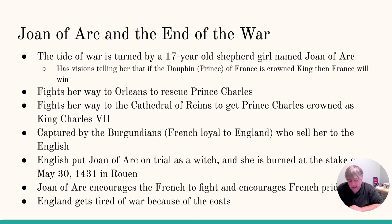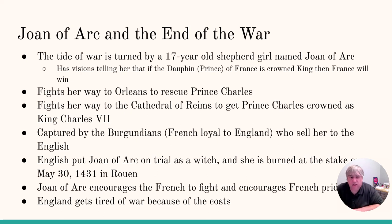So how does Joan of Arc encourage people to fight? She stimulates French pride — basically, if the 17-year-old shepherd girl can beat the English, we can beat the English too. At the same time, the English people are starting to demand an end to the war because it's just costing so much. Parliament refuses to spend more money — if the fight's going to continue, the royal monarchy is going to pay for it themselves. And the English kings don't want to spend the money. So by the time the war is over, the only parts of France still in English hands is the coastal city of Calais on the Normandy coast.